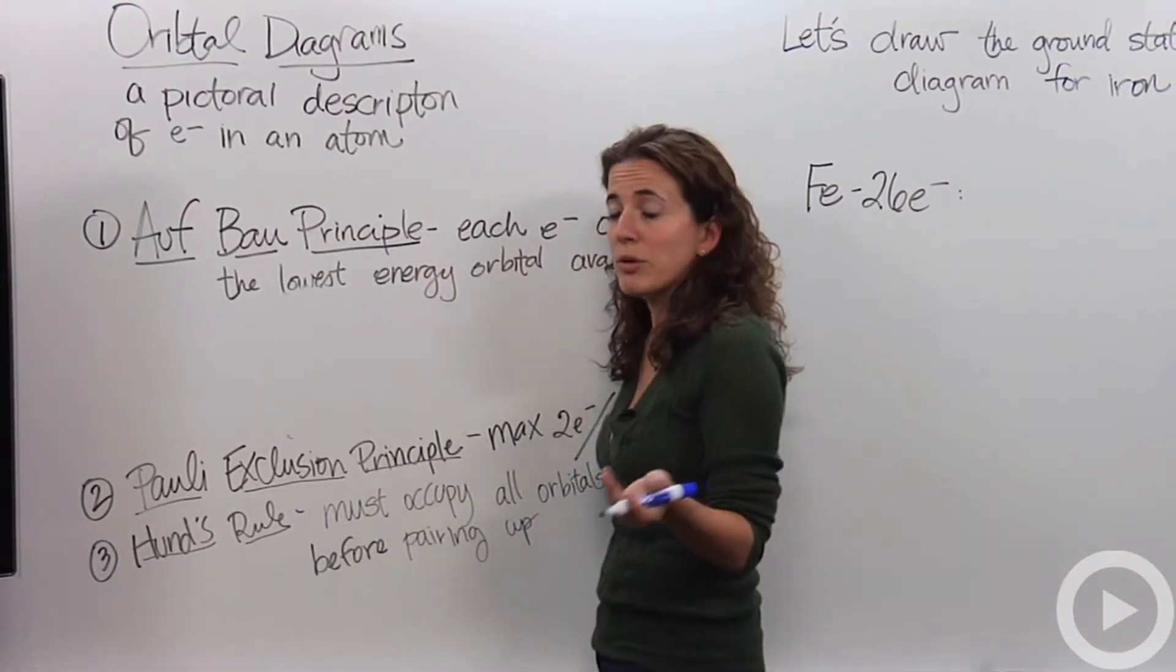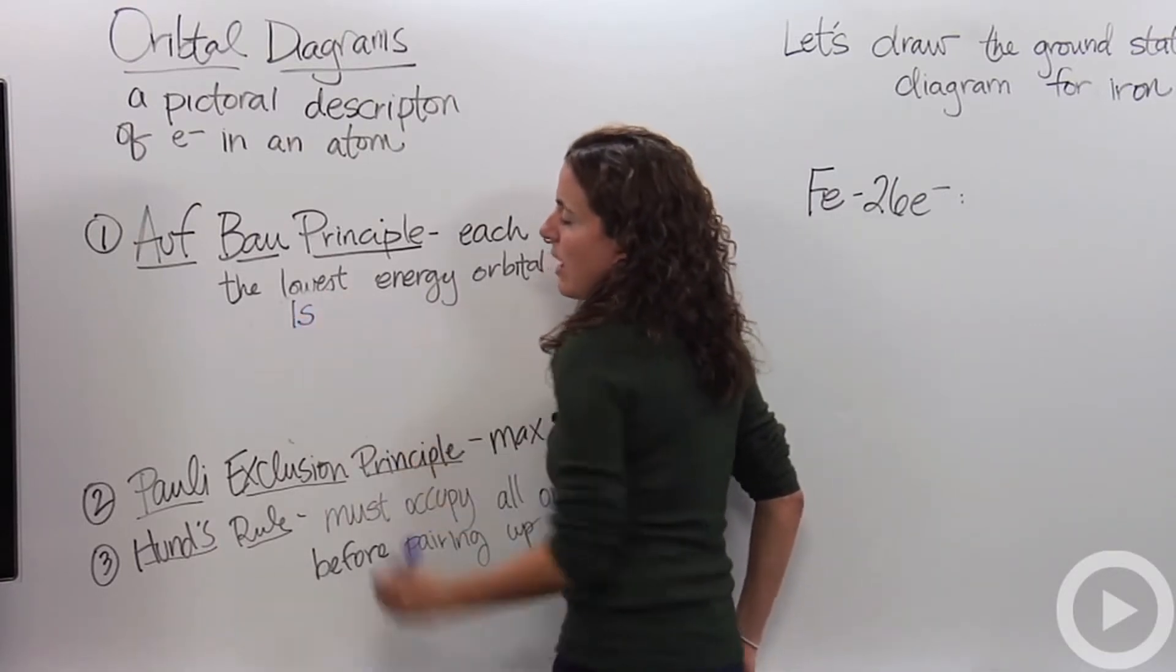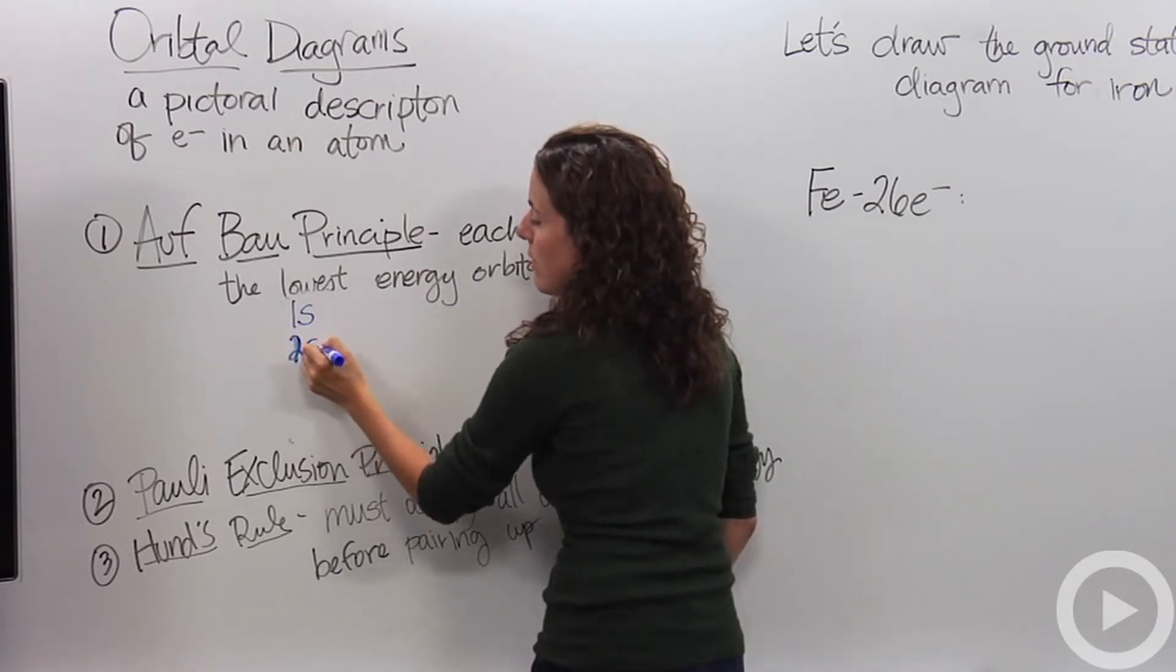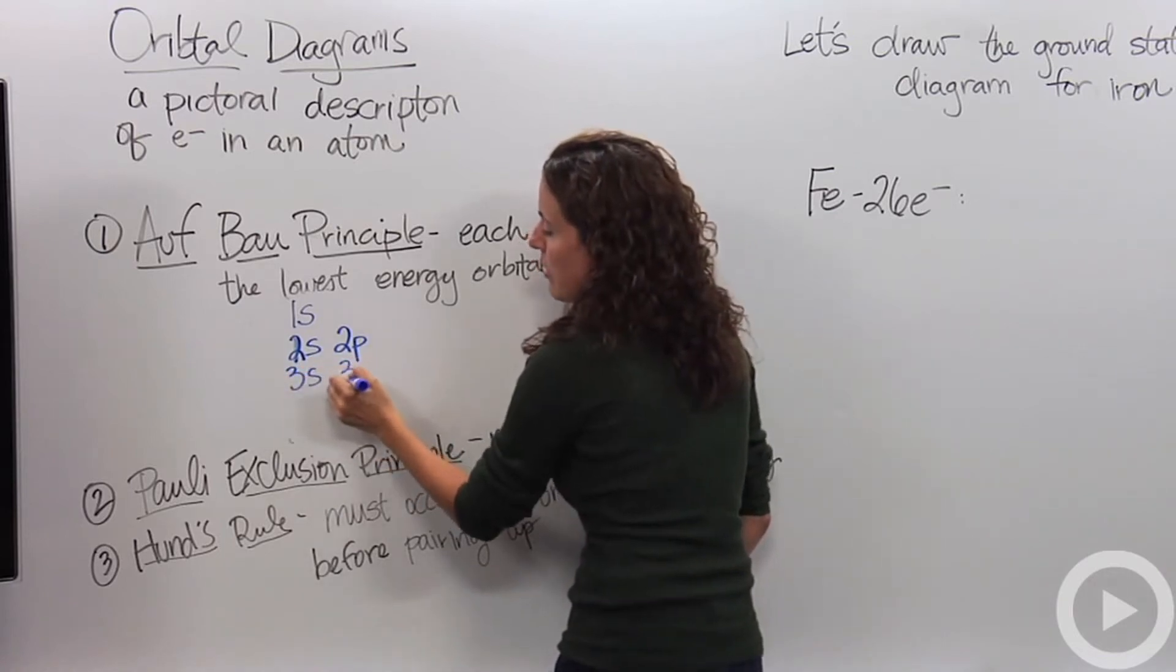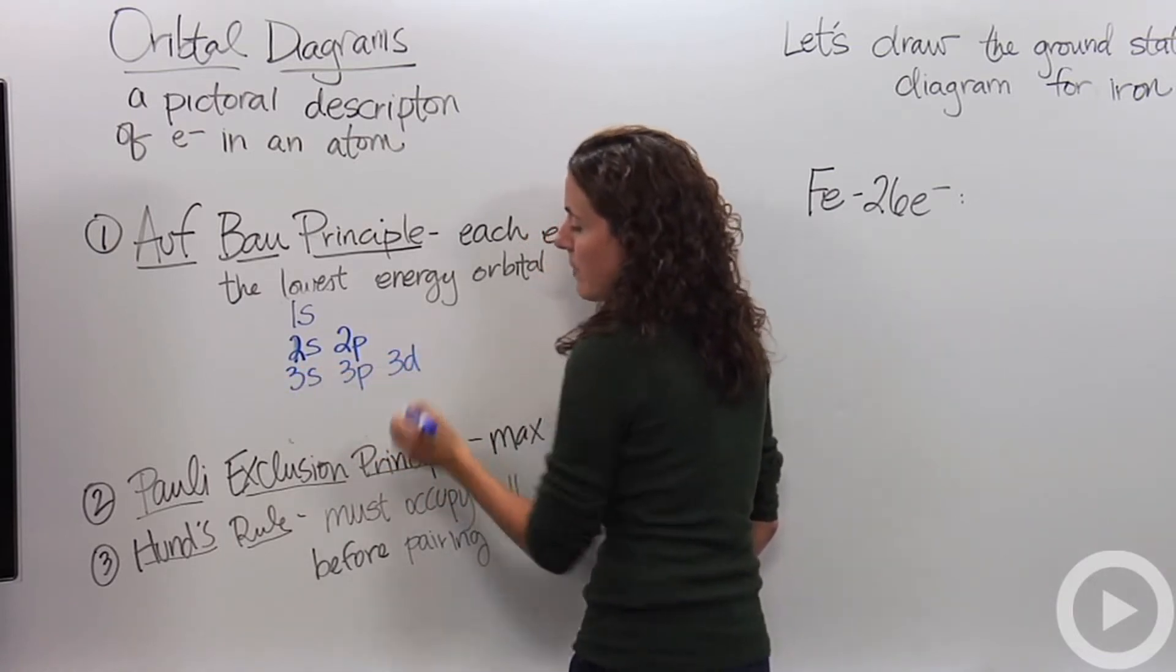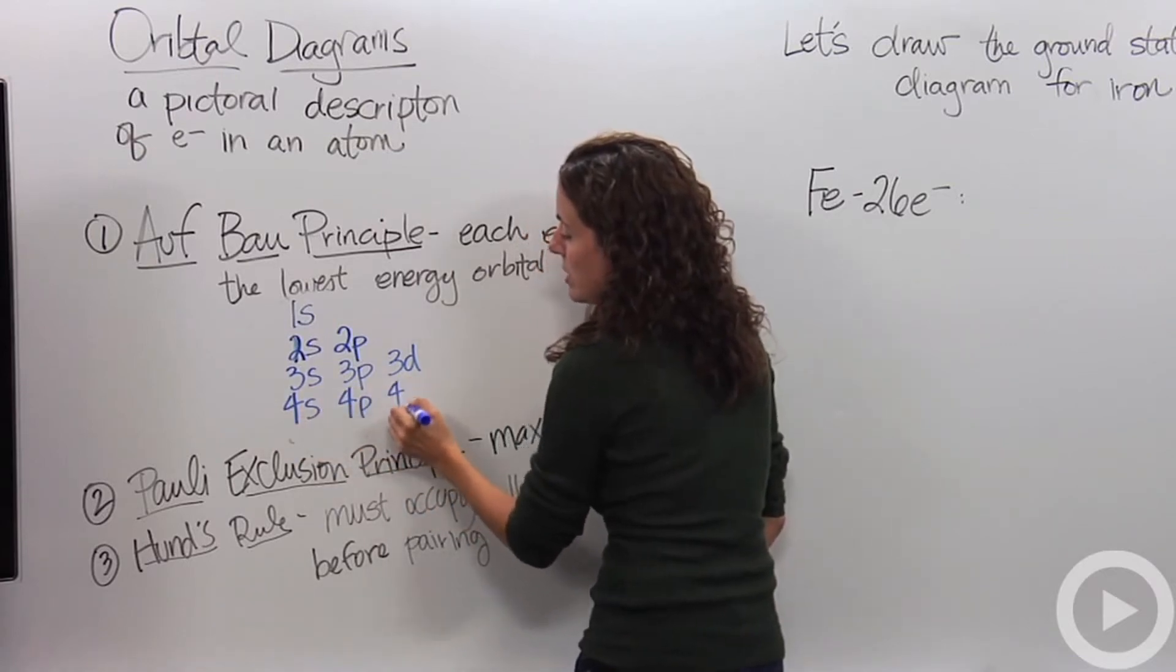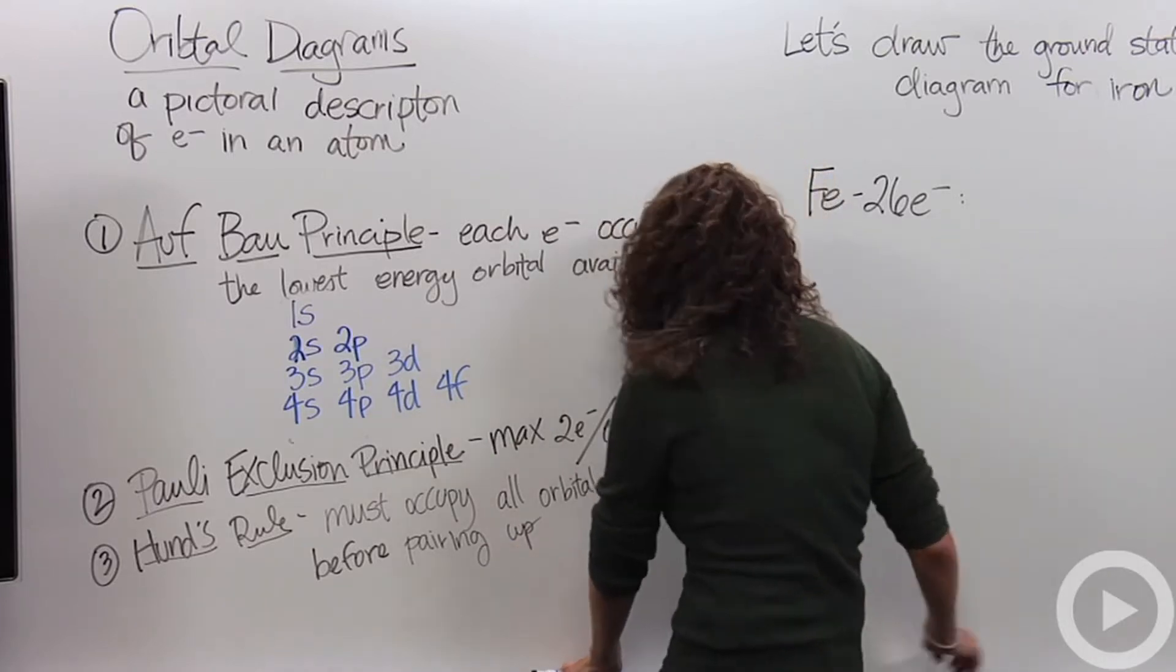Alright, we're going to make this chart, which might seem familiar from the classroom. The first energy level is the 1s orbital. Then we're going to do the 2s and the 2p, then the 3s, 3p, 3d, and the 4s, 4p, 4d, 4f, and so on and so forth. I'm not going to draw the entire thing, but you get how it works, how it comes out.